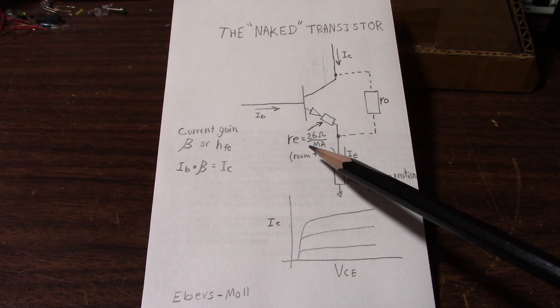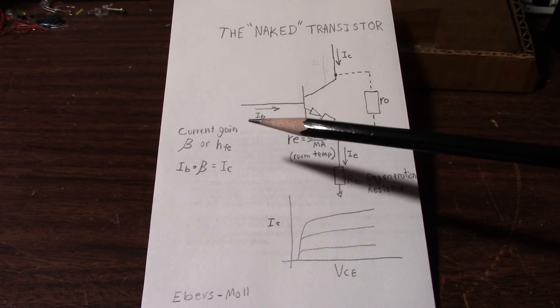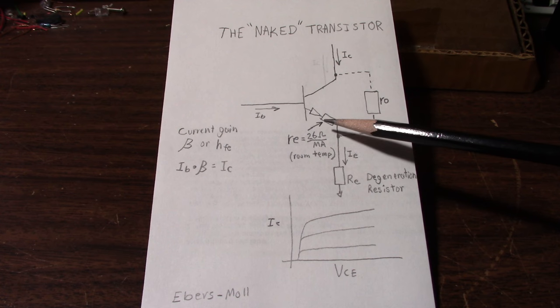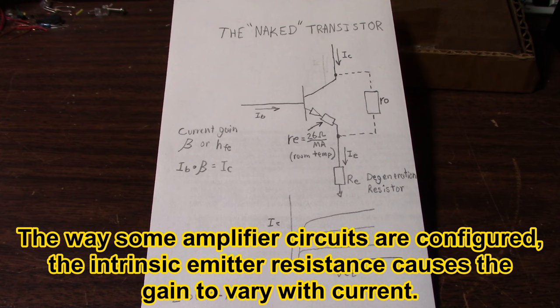So herein lies the problem. If we put a signal into this transistor, the current through this transistor is going to vary with the signal. That means the value of this resistor is going to change. This is a non-linearity which causes distortion. In fact, with transistors that do not have the emitter degeneration resistor, you'll have great amounts of second harmonic distortion.